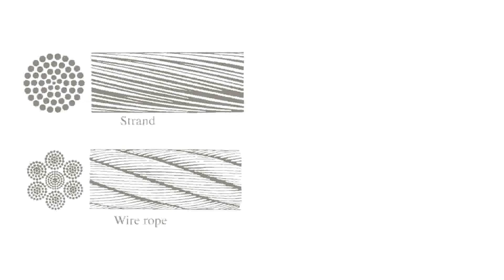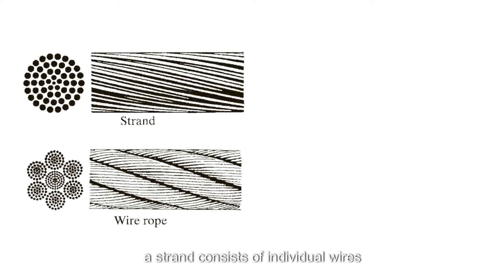There are two kinds of flexible cable components and the difference between them is illustrated here. A strand consists of individual wires wound helically around the central core and a wire rope is made of several strands laid helically around the core.